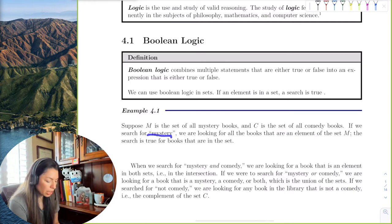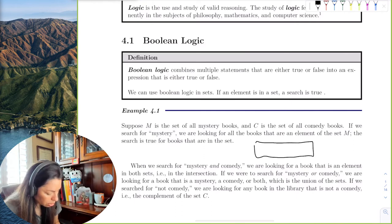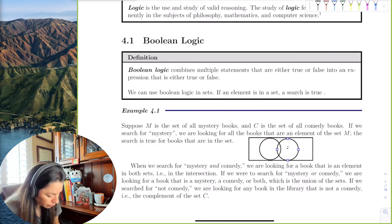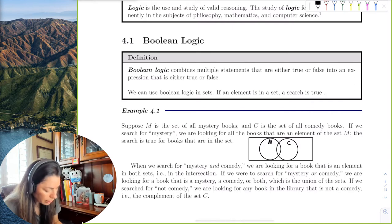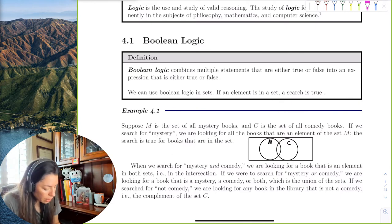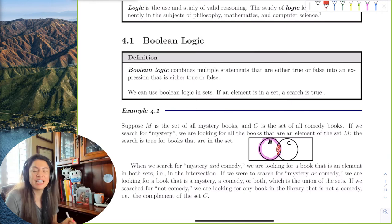Suppose M is the set of all mystery books, and C is the set of all comedy books. If we search for mystery, we are looking for the books that are the element in set M. So let me draw a little Venn diagram. Here's set M for mystery books, set C for comedy books. So when you search for mystery, it will search for the entire types of mystery. Will that include some comedy mystery? Yeah, like Clue. Clue is a great movie and a game. That was really funny and a mystery, like whodunit, right?